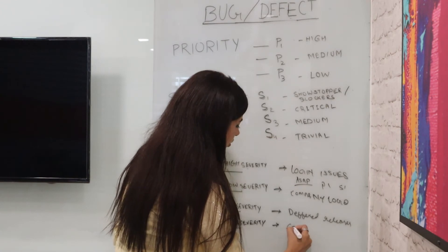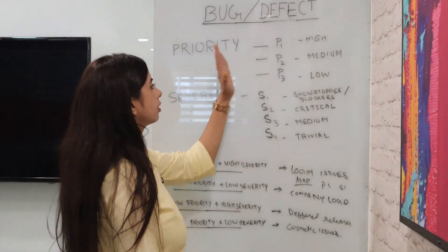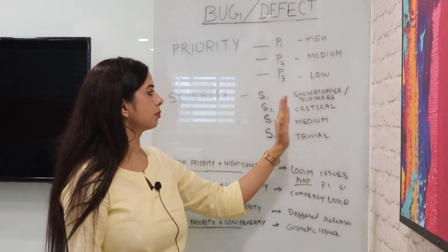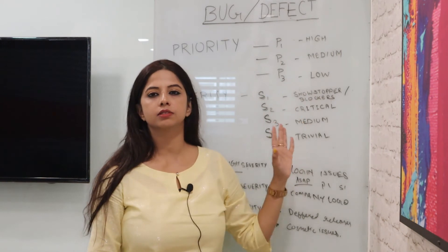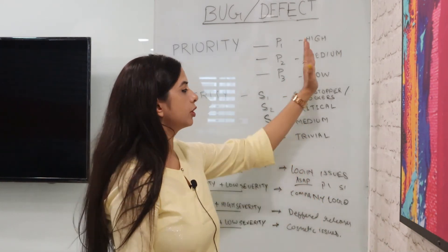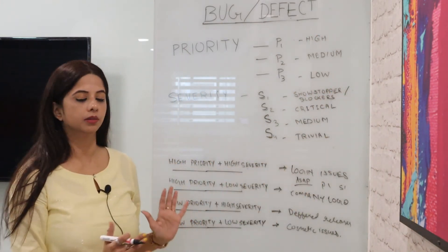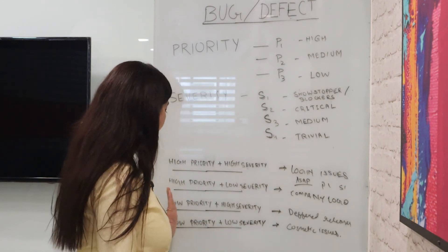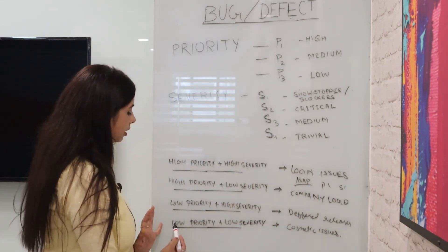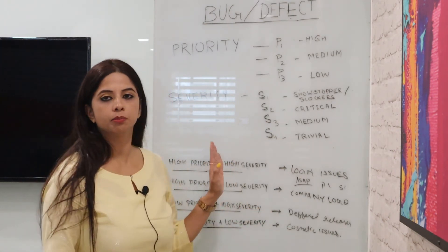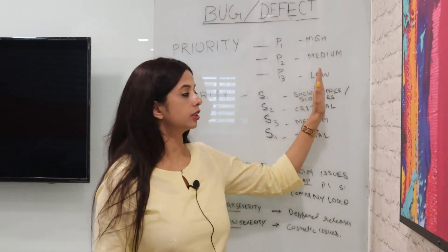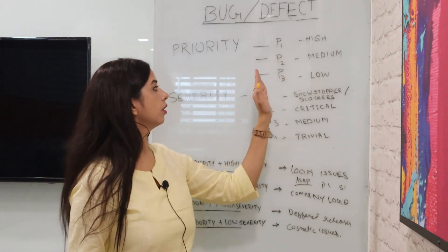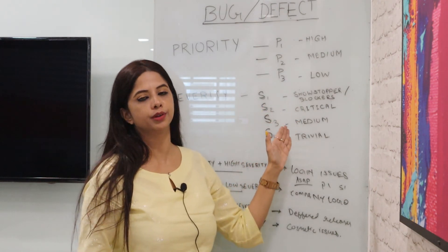To summarize, we saw the difference between priority and severity: there are different levels of priorities — high, medium, low — and different levels of severity — showstoppers, critical, medium, trivial. The nomenclatures can differ from company to company and application to application, but you have to understand the core difference. A bug can be high priority and high severity, high priority and low severity, low priority and high severity, or low priority and low severity. You have to clearly mark your bugs for the priorities and severities they fall into.